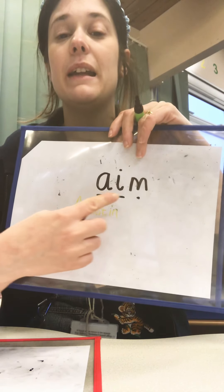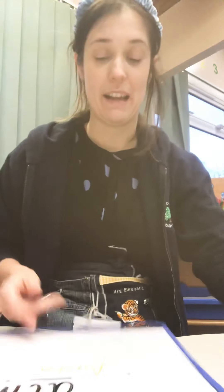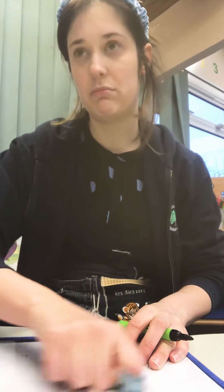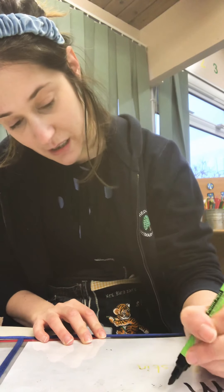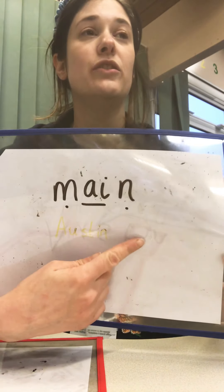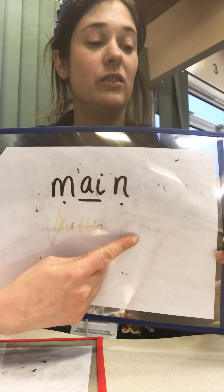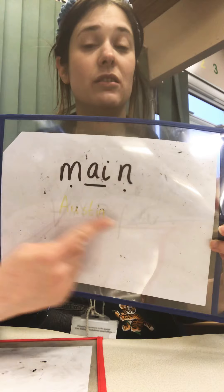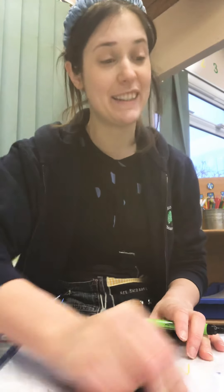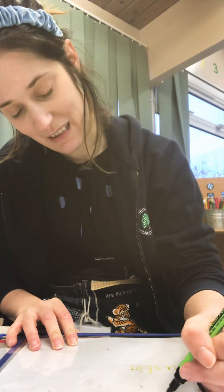The first word is 'aim' — 'I will aim my arrow.' Like Robin Hood, who aims his arrow at the bad guy. Next word is 'main' — the main song in Frozen is 'Let It Go'.